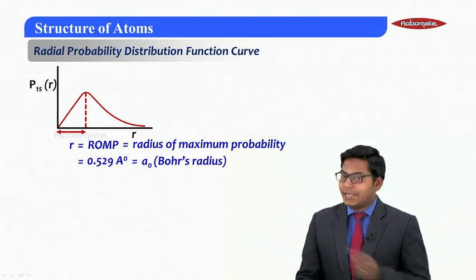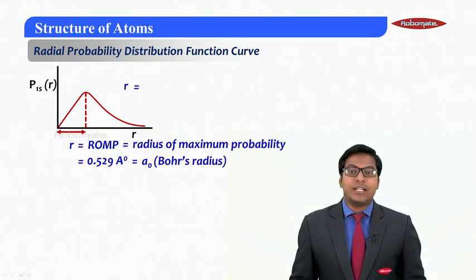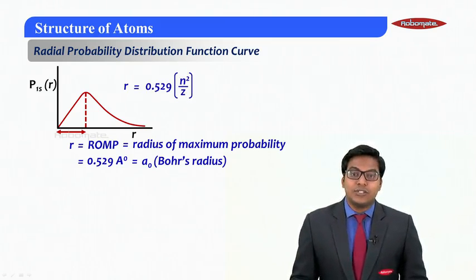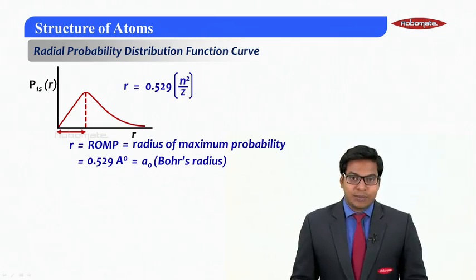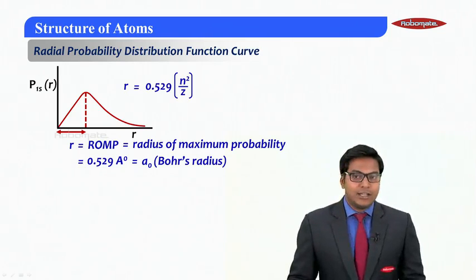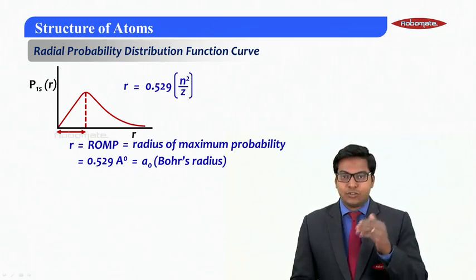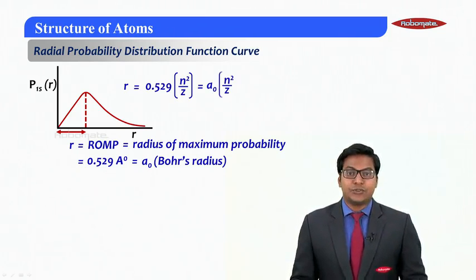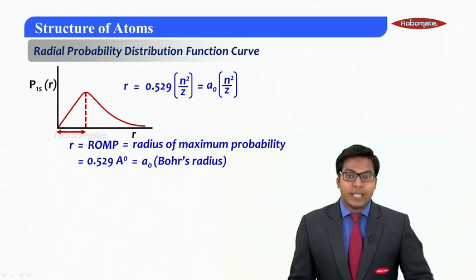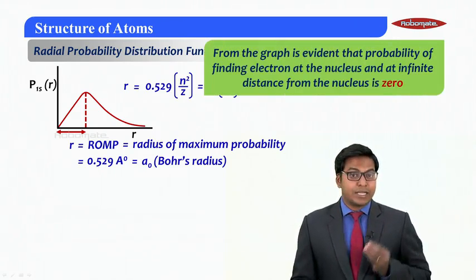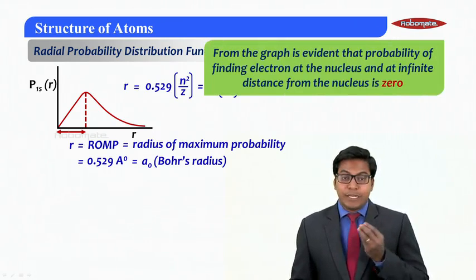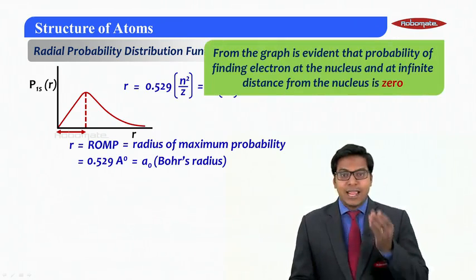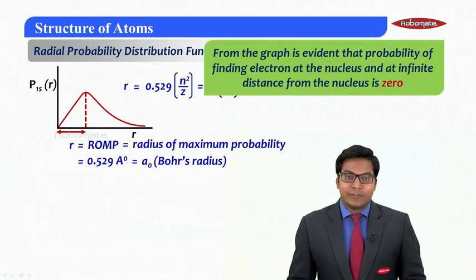Let me assign it as a₀. Now we know that according to Bohr, r equals 0.529 n² by z. So if z is constant for every value of n, you should be getting a higher value of the radius, which I can write as a₀ into n² by z.